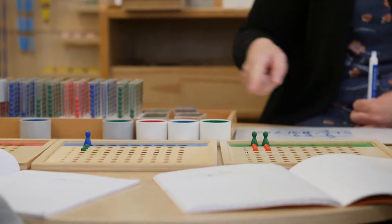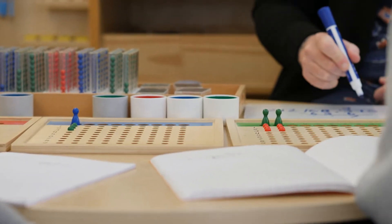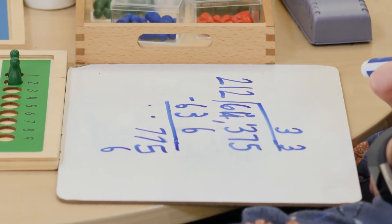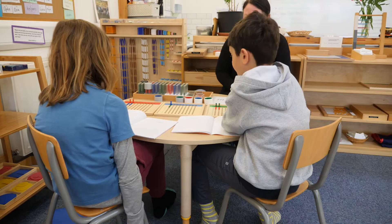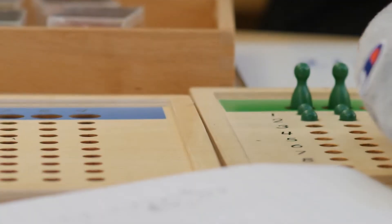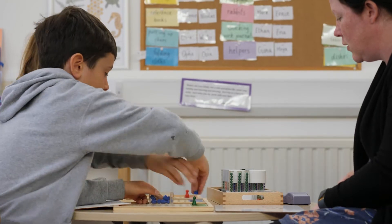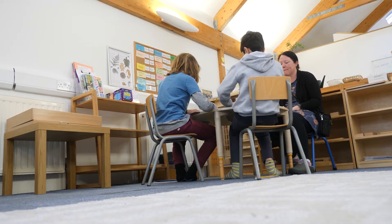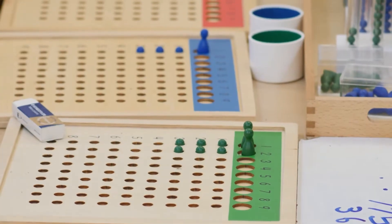Dr. Montessori described all humans, including children, as having a mathematical mind. This is the idea that the human mind is naturally equipped to understand mathematics and is able to relate to the world in a mathematical way. Our role as teachers is not to teach each individual subject within maths, but rather to prepare the environment so the children are able to make these mathematical discoveries for themselves.